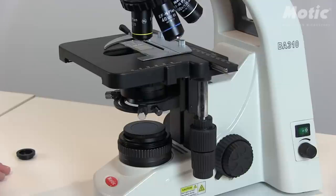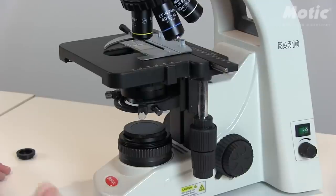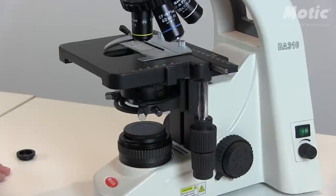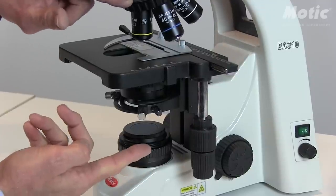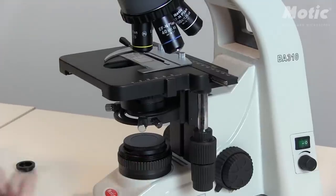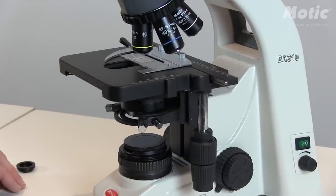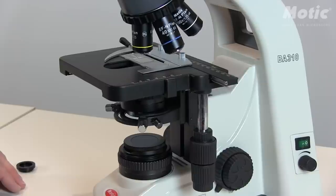Now, any birefringent structure will shine up as a bright structure or even colorful structure on this dark background. Please note that any strain component within the polarizer and analyzer area will lighten up the background. So it may not be perfectly dark, but only dark grayish.